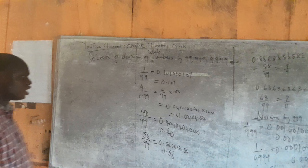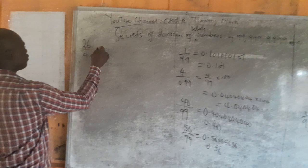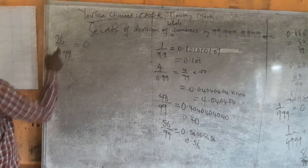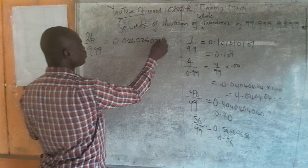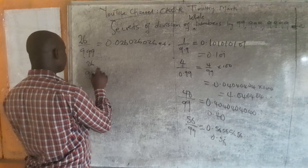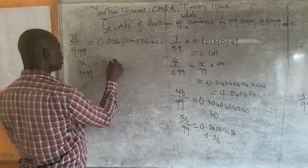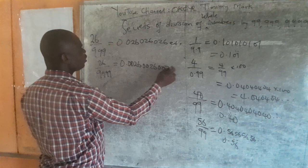So now let's go to two-digit whole numbers divided by 999. If I have 26 over 999 — this is two digits and the divisor is three digits. So I will pad it: I write 026, making it three digits to correspond. So 26 over 999 is 0.026, 026, 026... repeating.